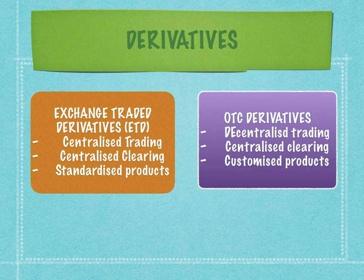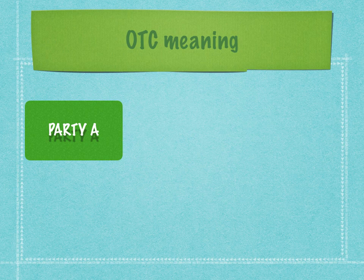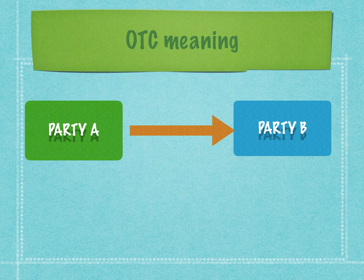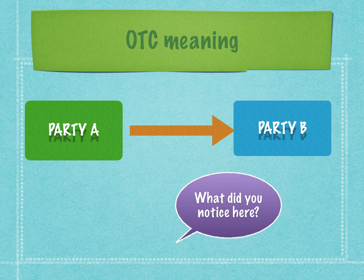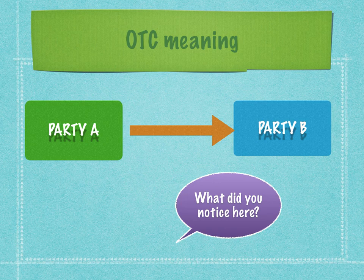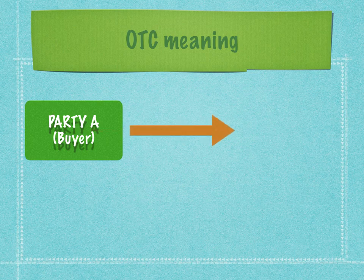OTC derivatives are therefore the game for the big boys, because they require a deep understanding of the risk involved. Because of those risks, several regulations have come into place in the last 14 years, causing the OTC derivative market to grow in size while the regulatory and reporting space has also increased in volume. In the first scenario, Party A — an investment bank — directly deals with Party B — a corporate — with no centralized trading at all.